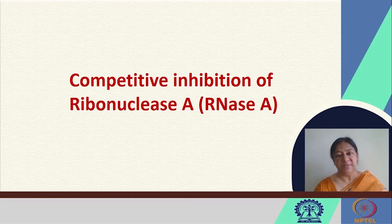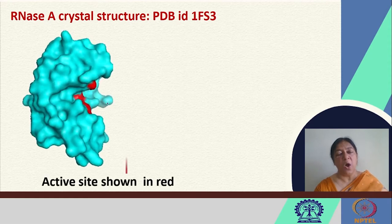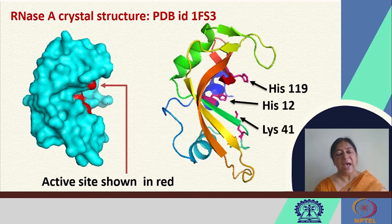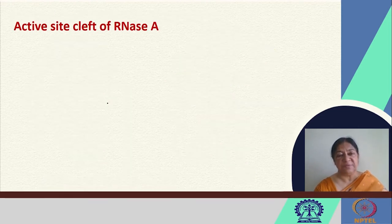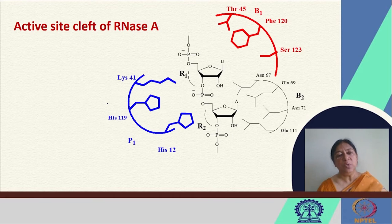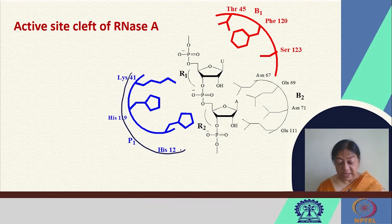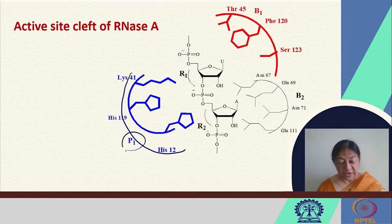Looking now at competitive inhibition of ribonuclease A, a very well-studied protein, we need to understand the composition of the active site. In the active site, we have histidine residues and lysine residues that each have specific roles. Examining the active site cleft of RNase A in more detail, we see specific sites. Ribonuclease A cleaves ribonucleic acid. The main active site has catalytic activity associated with the histidines and the lysine. There is also a phosphate recognition site where the phosphate is located.